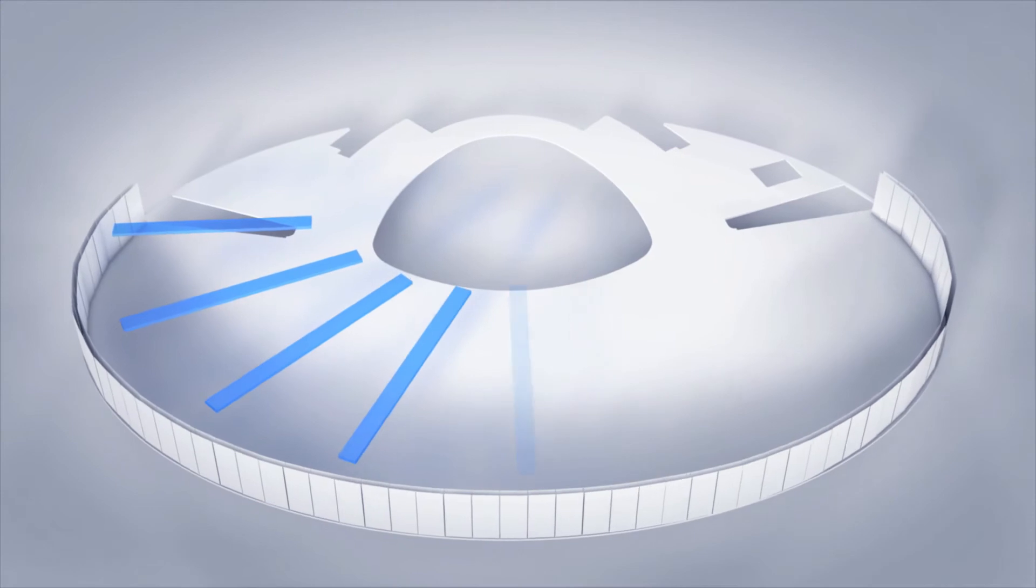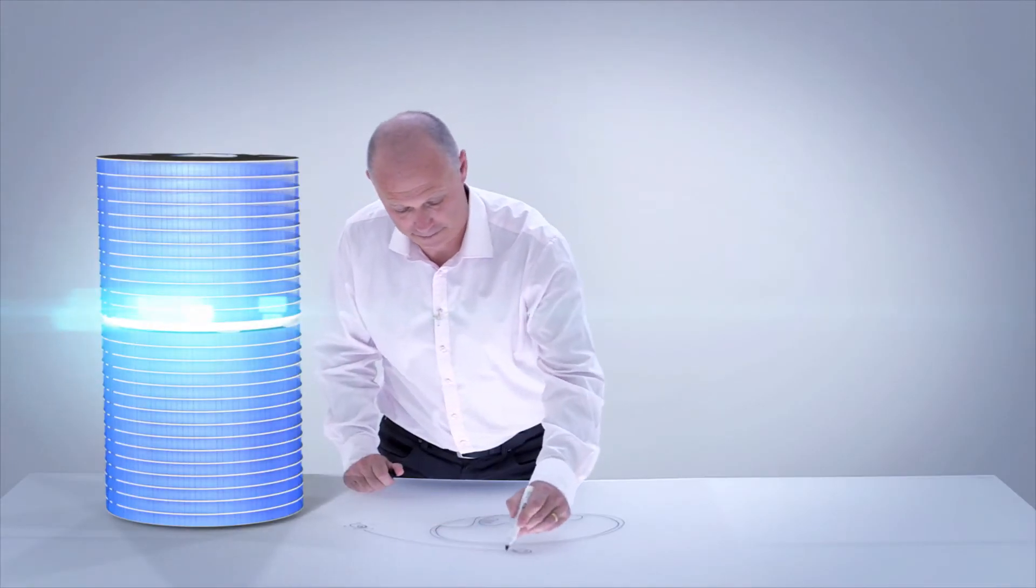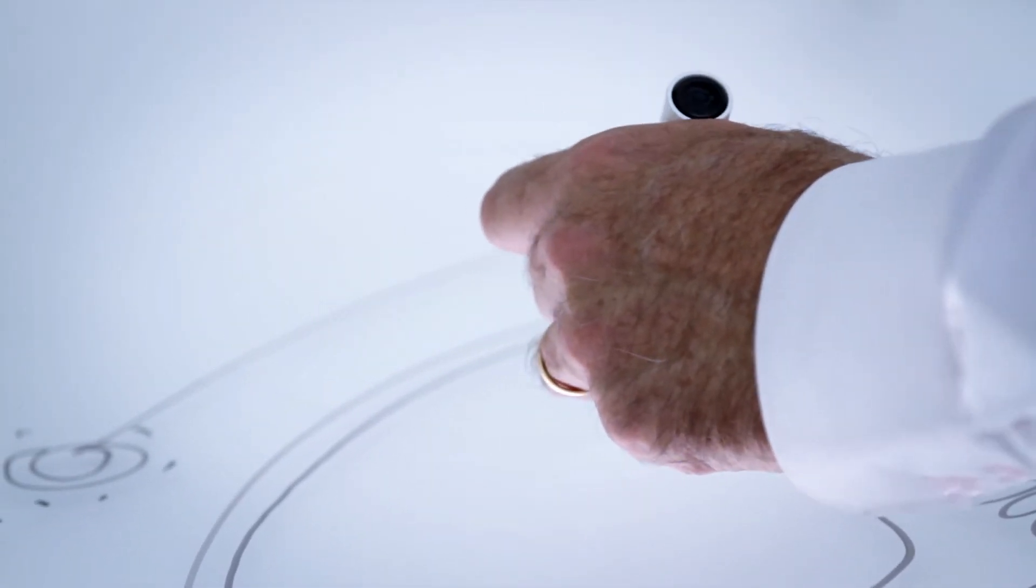But around the elliptical form of the facade we use a chilled beam technology so that the cooling actually tracks the solar journey across the facade. So it's effectively Australia's first hybrid air conditioning system. Now that's almost become the industry standard.